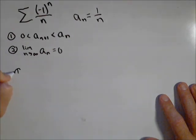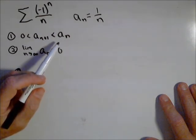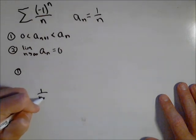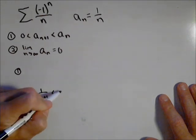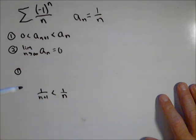Let's take part one first. We need to show that a sub n plus one is less than a sub n. So we need to show one over n plus one is less than one over n. Do this similar to how we would do the comparison test.